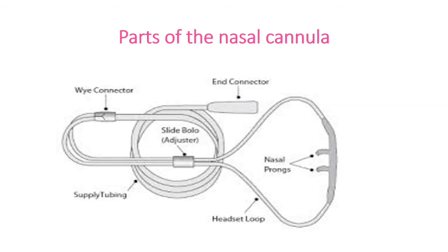The parts of the nasal cannula include the nasal prongs — two protruding prongs which can be inserted into the nostrils — the headset loop, the Y connector, the supply tubing which connects with the Y connector, which ends up with the main oxygen supply.